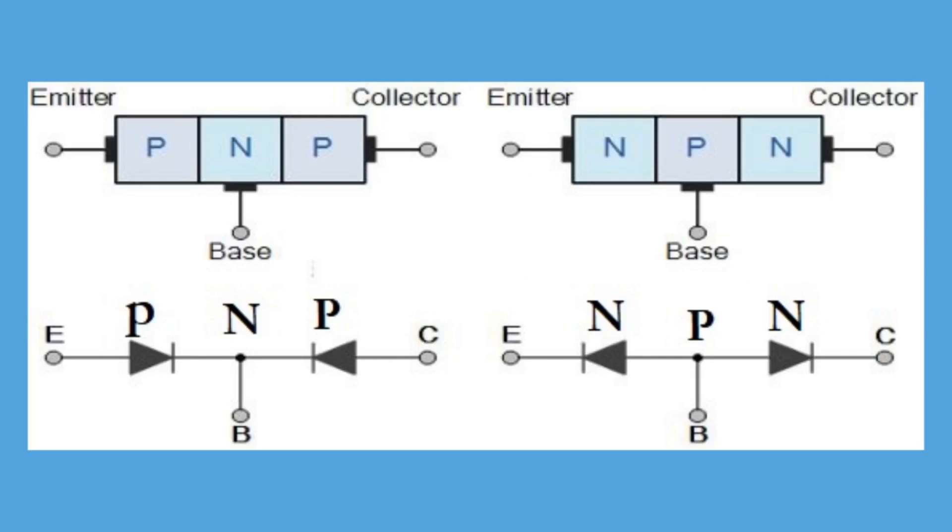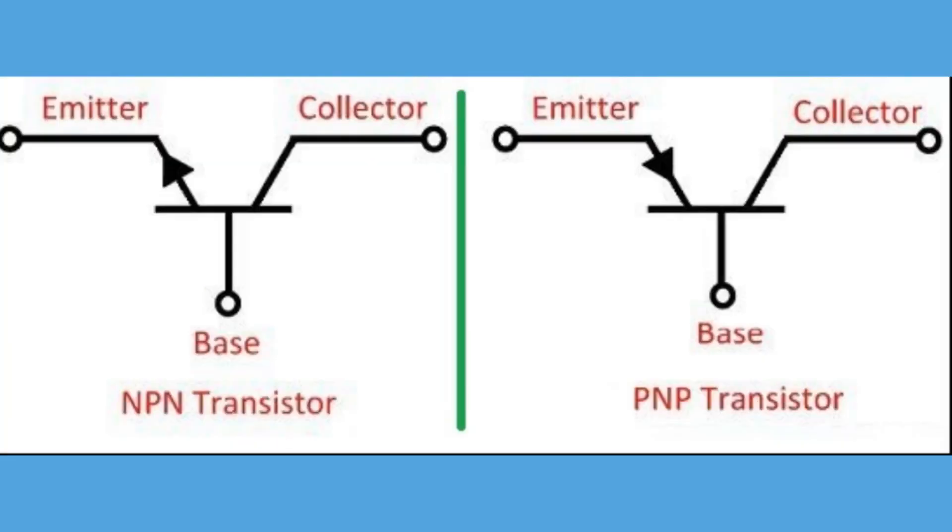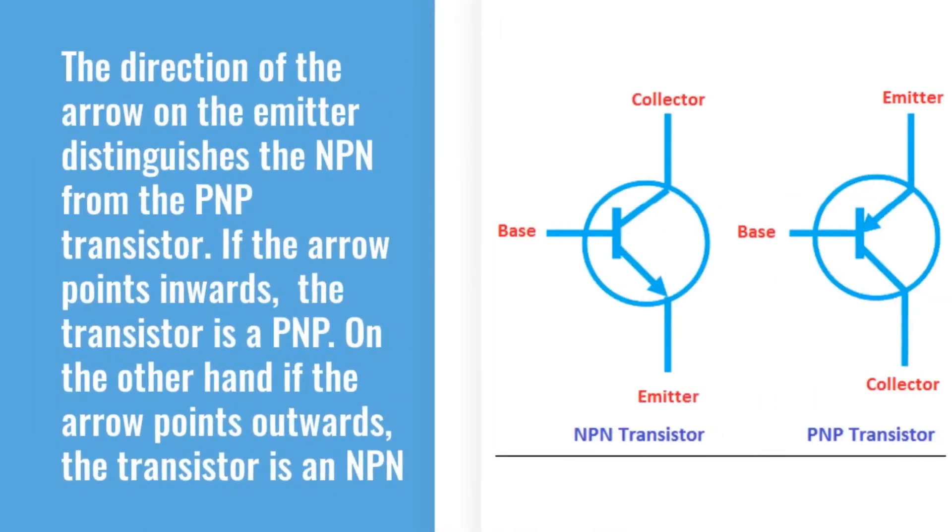Now, take a good look at these drawings. Do you see the difference in the direction where the arrows are pointing? The horizontal line represents the base, the angular line with the arrow on it represents the emitter, and the other angular line represents the collector. The direction of the arrow on the emitter distinguishes the NPN from the PNP transistor.